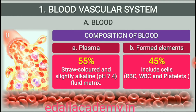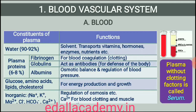Plasma is a straw-colored, viscous fluid constituting nearly 55% of the blood. Ninety to ninety-two percent of plasma is water and proteins contribute 6-8% of it. Fibrinogen, globulins and albumins are the major proteins. Fibrinogens are needed for clotting or coagulation of blood. Globulins primarily are involved in defense mechanisms of the body and the albumins help in osmotic balance. Plasma also contains small amounts of minerals like sodium ion, calcium ion, magnesium ion, CO3, chlorine ion, etc.